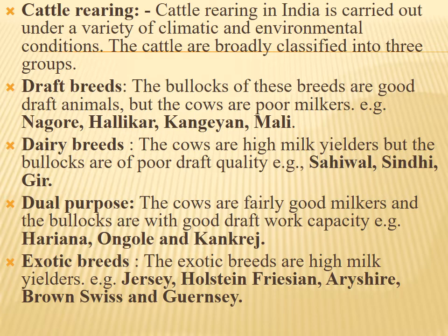Dairy breeds: the cows are high milk yielders but the bullocks are of poor draft quality — examples include Sahiwal, Sindhi, and Gir. Dual purpose breeds: cows are fairly good milkers and bullocks have good draft work capacity — for example, Haryana. Exotic breeds are high milk yielders — for example, Jersey, Holstein Friesian, Brown Swiss.